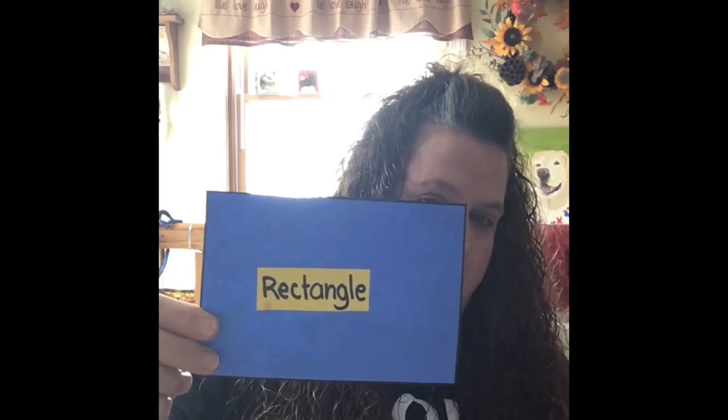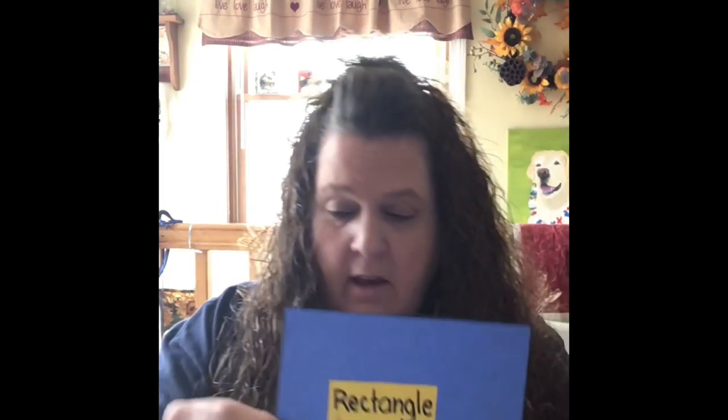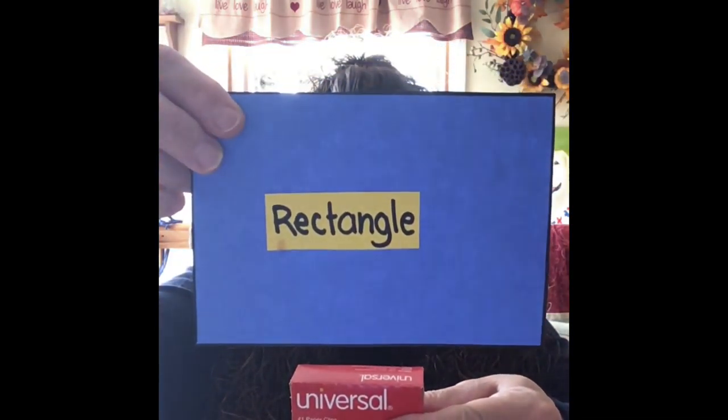I also found something that looked like our rectangle. I found a little box that's kind of like a rectangle — it's got two long sides and two short sides. I also found this little card, which is a rectangle too. It has a long side, a long side, a short side, and a short side — just like my rectangle.